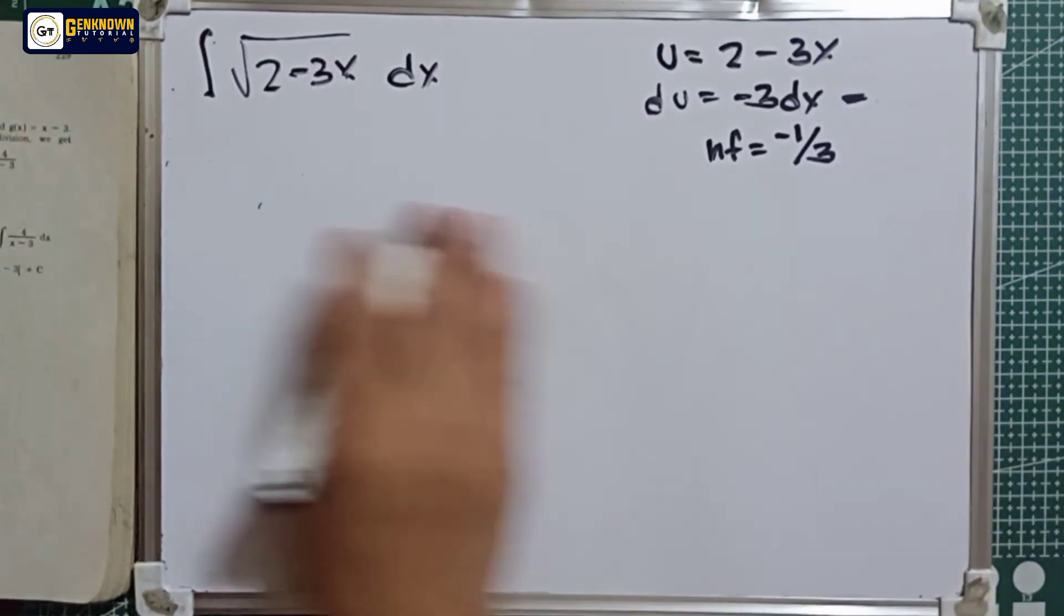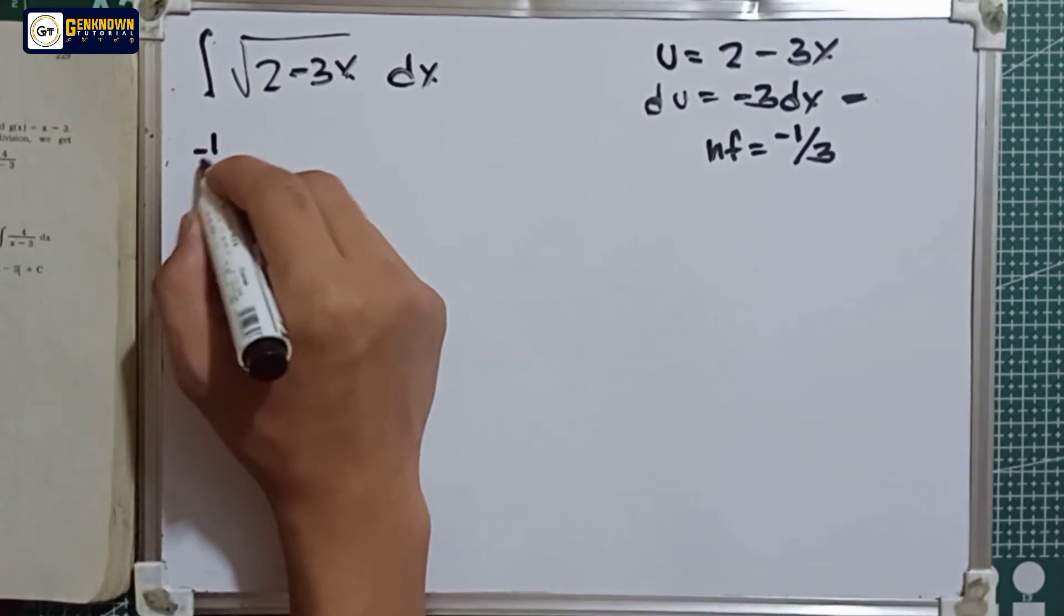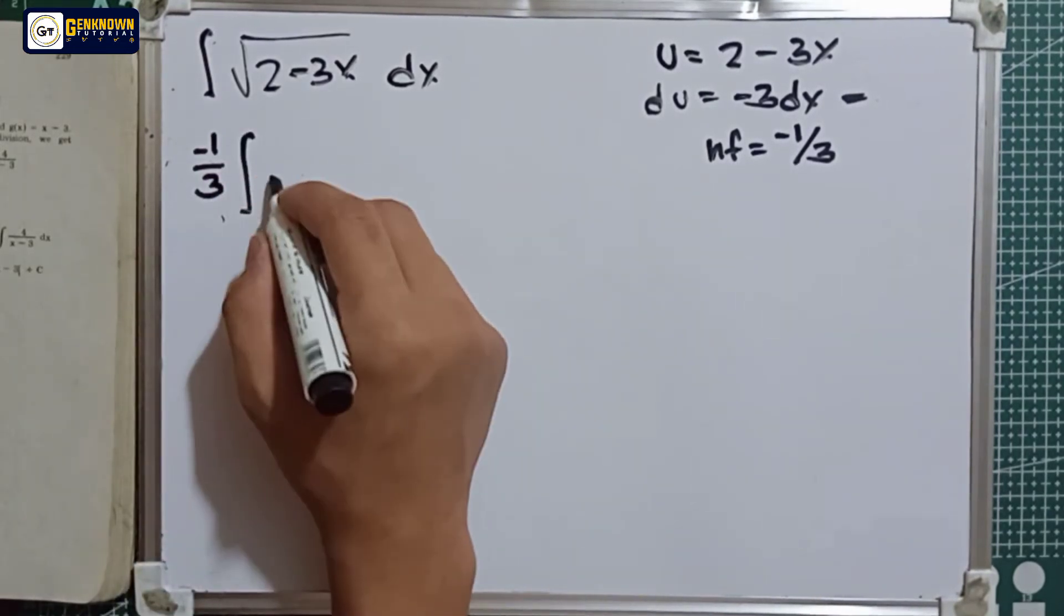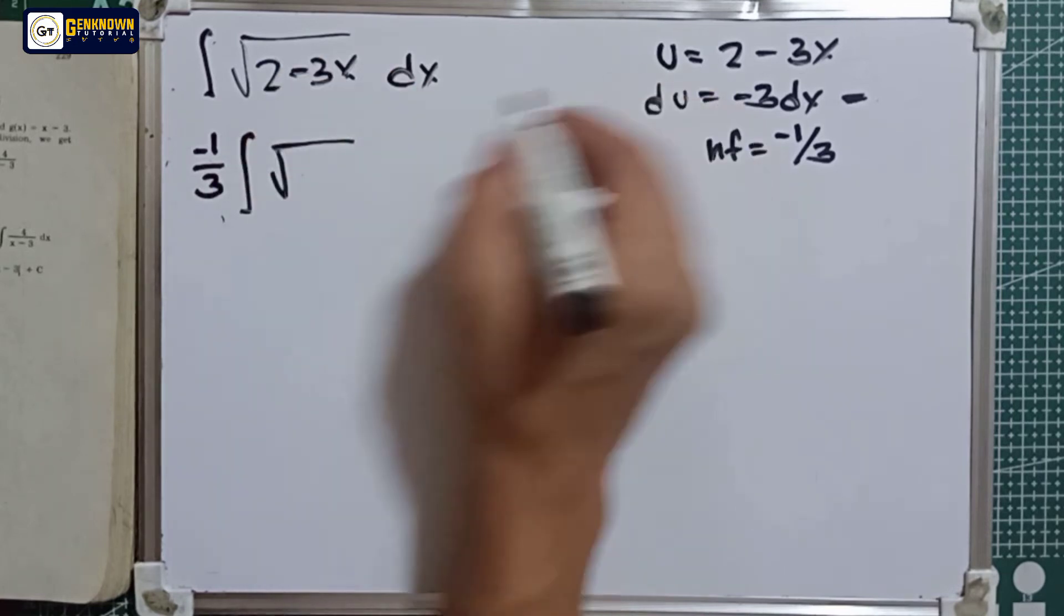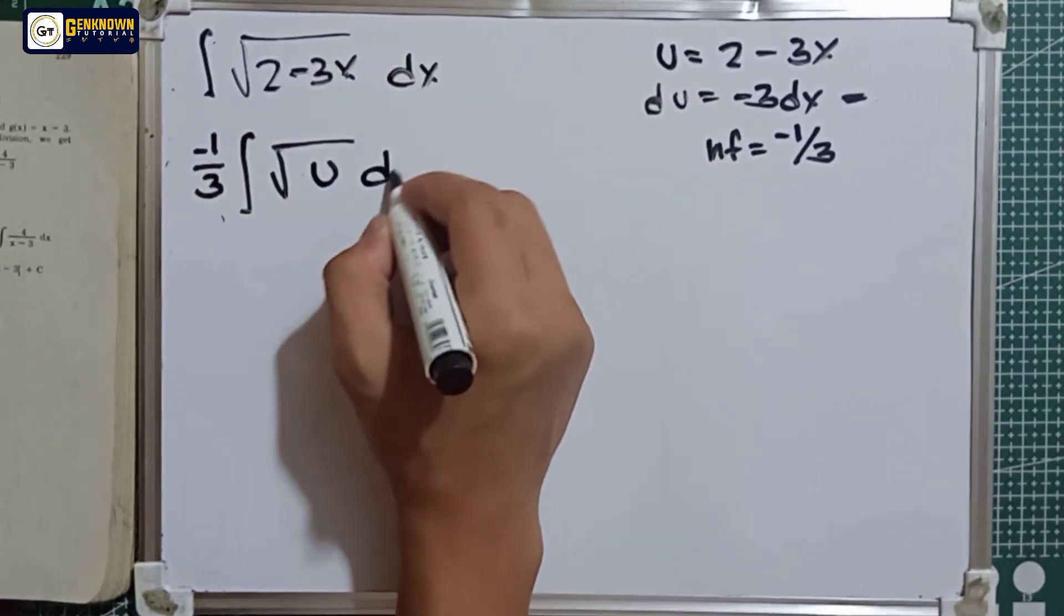Sub na natin dito, we have the neutralizing factor negative 1 over 3, integral of square root of the radicand u and du.